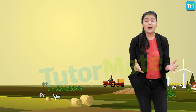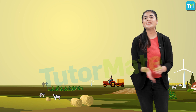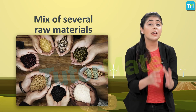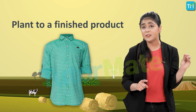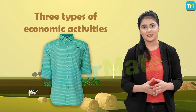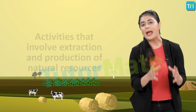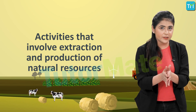Let us learn how agriculture and crop cultivation works around the world. Welcome to the first segment of the chapter on agriculture. What comes to us as a finished food product in the market is a mix of several raw materials grown and cultivated on the farm. This transformation from a plant to a finished product involves three types of economic activities: primary, secondary, and tertiary.